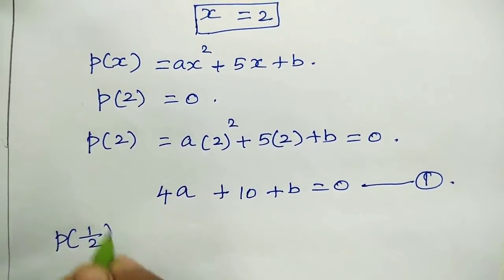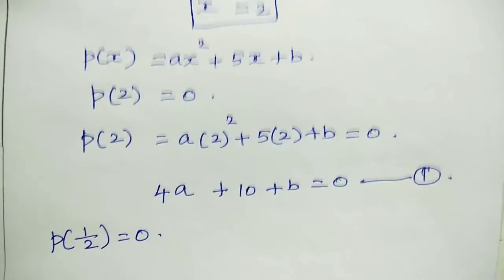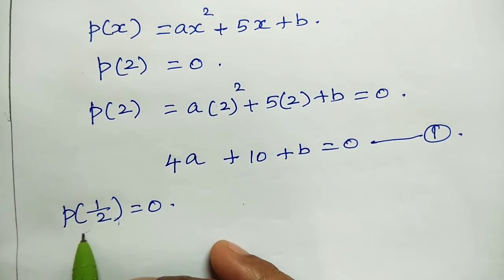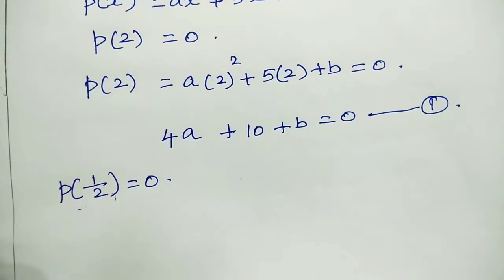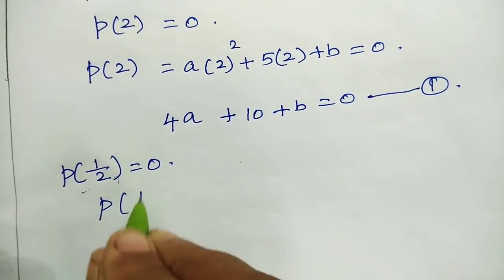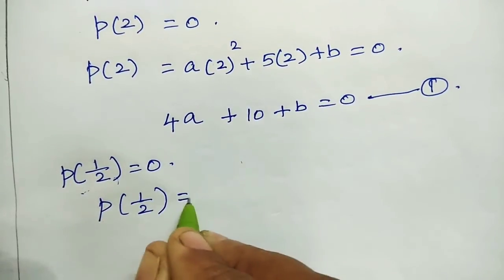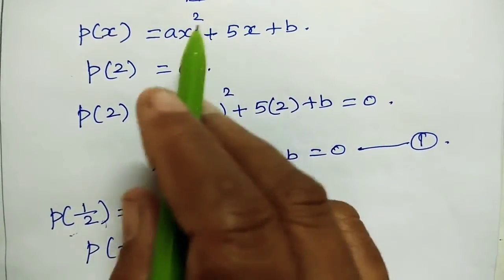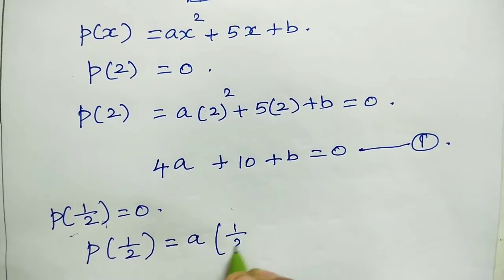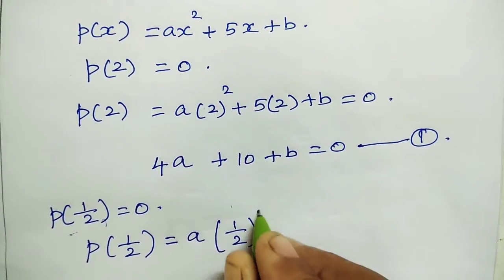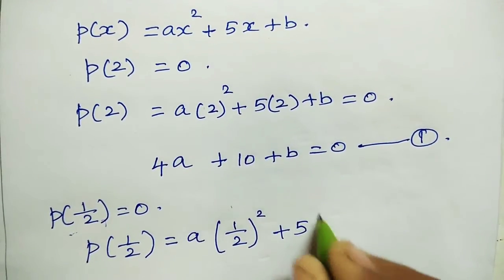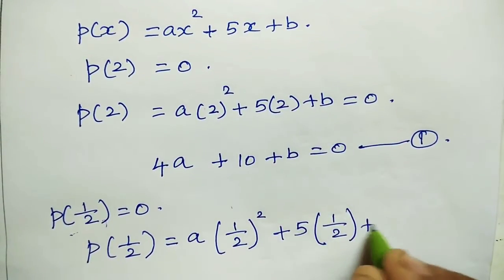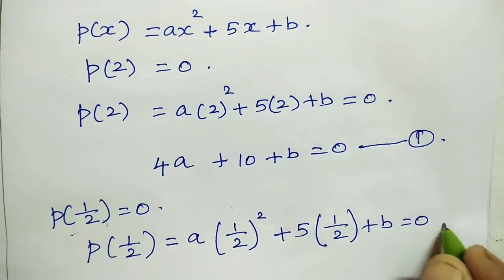Now we write p(1/2) equal to 0 for the second factor. Since x minus 1/2 is also a factor, we substitute x equal to 1/2 into p(x): a times (1/2) squared plus 5 times (1/2) plus b equals 0.